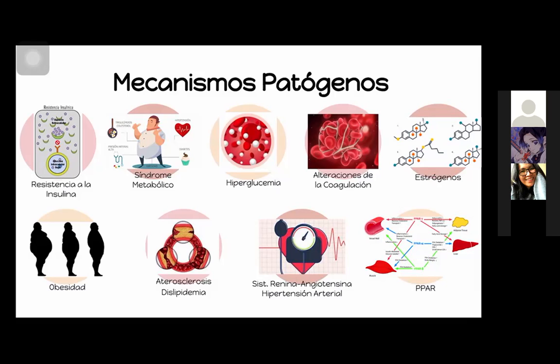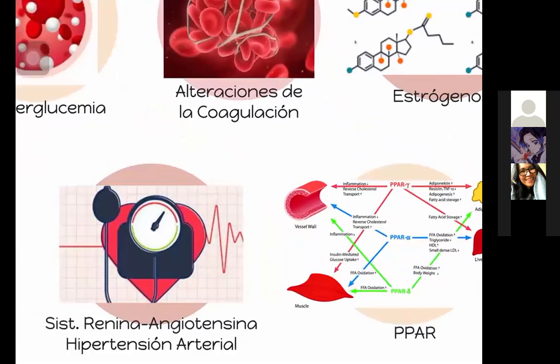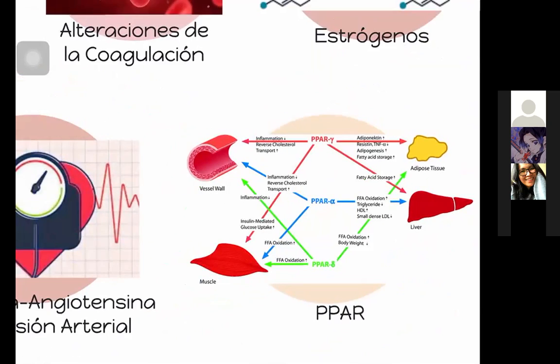También hay un aumento de propensión a proteinuria, hipotensión ortostática y presión arterial sistólica aumentada de manera aislada. Están también las dislipidemias y los receptores activadores de proliferación de peroxisomas, que son muy importantes porque es una vía en la que cruza el metabolismo, por lo que podría ser también una diana terapéutica.